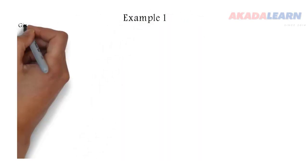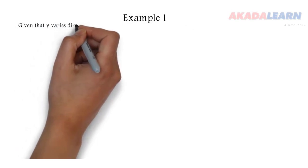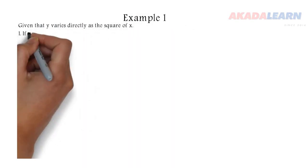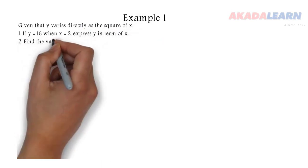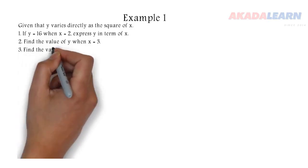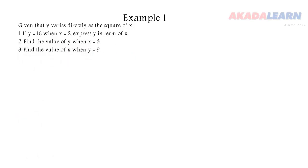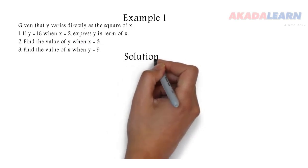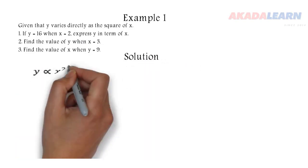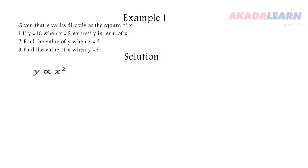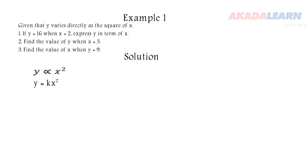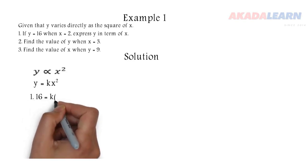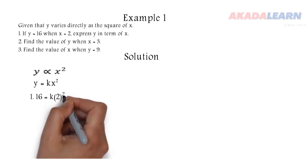Now let's see an example. Given that y varies directly as the square of x: if y is 16 when x is 2, express y in terms of x; find the value of y when x is 3; and find the value of x when y is 9. Since y varies directly as the square of x, we introduce our constant: y equals kx squared.